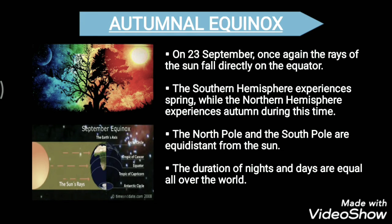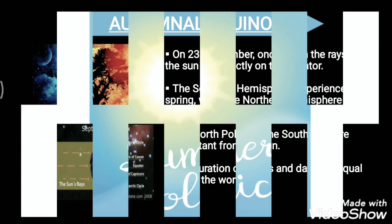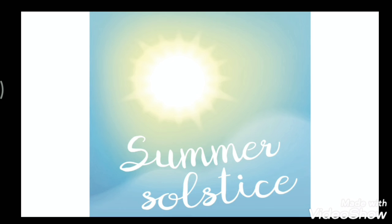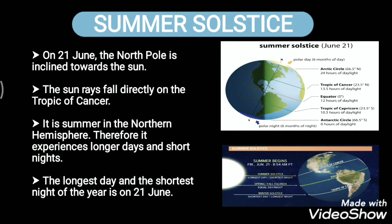Now, just as we have the equinoxes, Earth also comes into a position on 21st of June called the summer solstice. The summer solstice is also known as the estival solstice or midsummer. It occurs when one of Earth's poles has its maximum tilt towards the Sun.